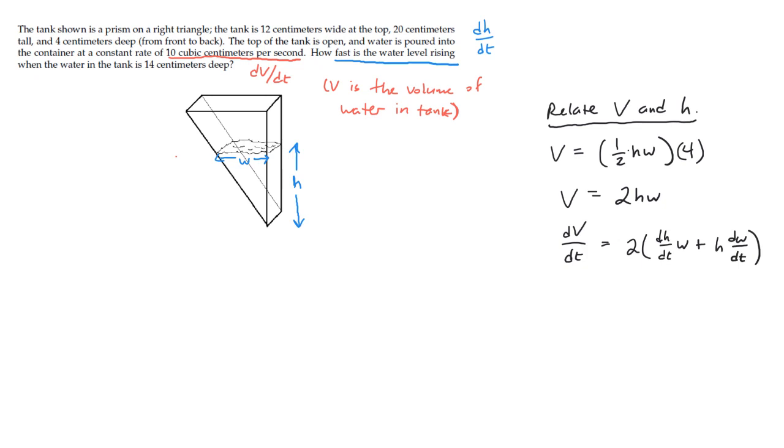And at this point, we can kind of take stock of where we are. It looks like we know something about dV/dt. We want to know what dh/dt is. We don't know yet what w is, although maybe we can find that out. We know what h is at the time we want to find dh/dt. We don't know so much about dw/dt.